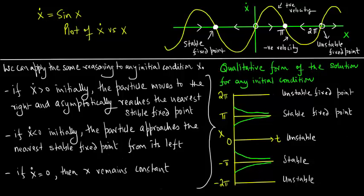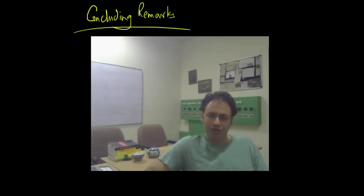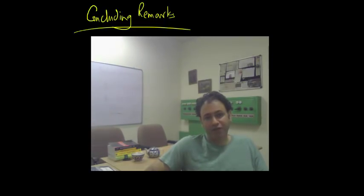The qualitative form of the solution for any initial condition can be plotted using these rules. The trajectories are converging towards x equal to pi and x equal to minus pi because these are the stable fixed points. Now let us wrap up this lecture. We started our study of nonlinear systems with equations of the form x dot equal to f of x — these are one-dimensional flows, and we were keen to understand flows on the line.